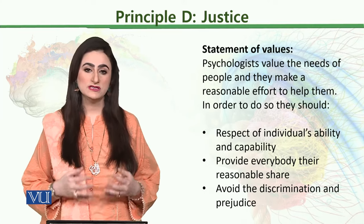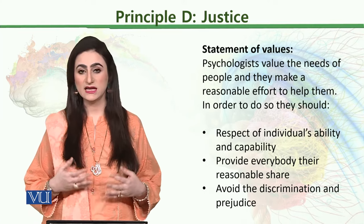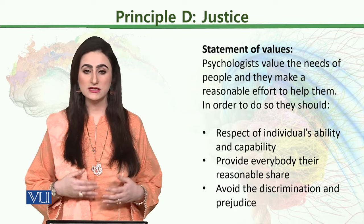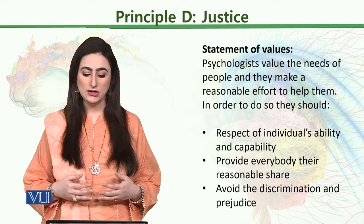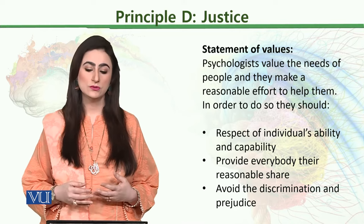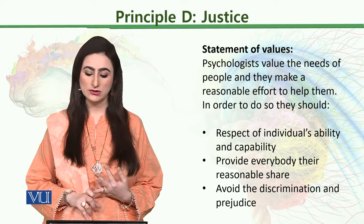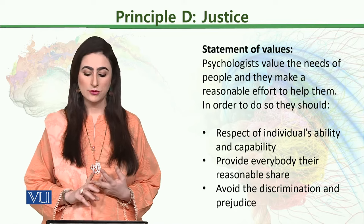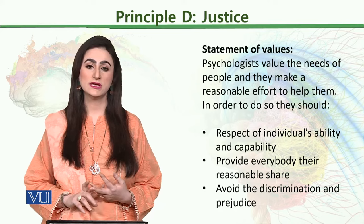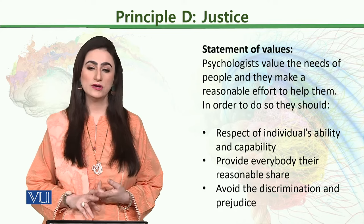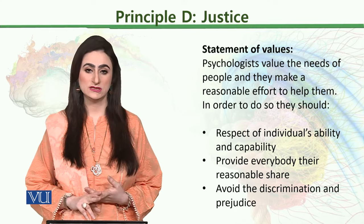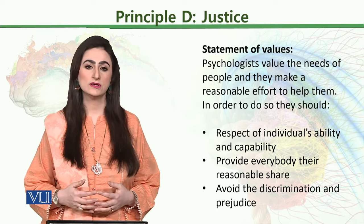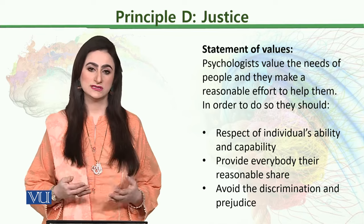The statement of values for this principle says that psychologists value the needs of people and make reasonable efforts to help them. To do so, they should follow three guidelines: respect each individual's ability and capability whatever it may be; provide everybody with reasonable care and fairness; and avoid discrimination and prejudice. These three principles form the basis and guidelines for the ethical principle of justice.